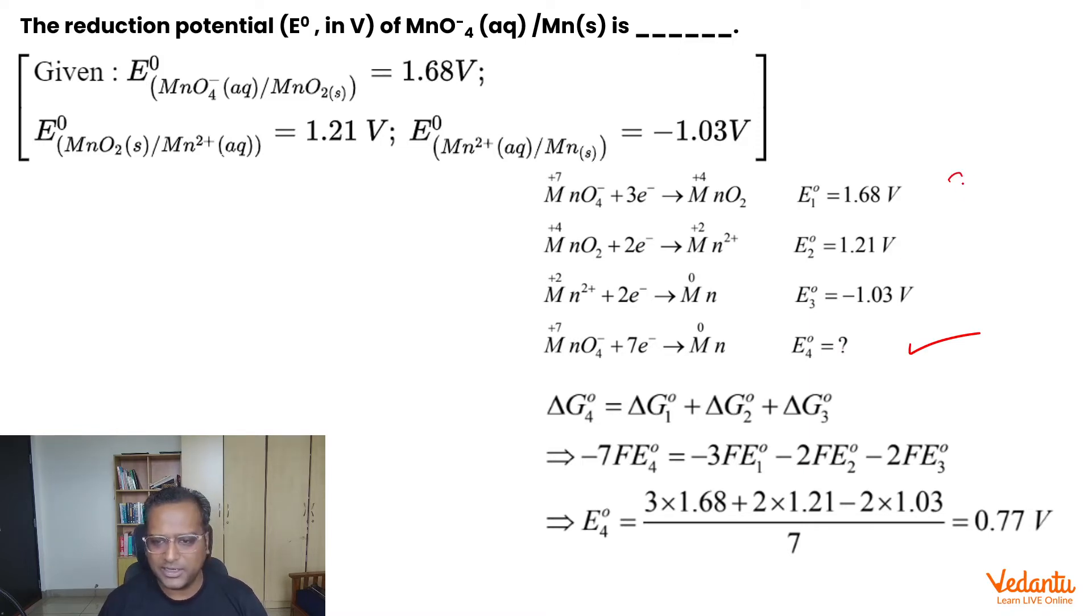We have been given other three reactions. In the first case, permanganate goes to MnO2. Second case, MnO2 goes to Mn2+. The third case, Mn2+ goes to Mn0. All the voltage data has been given to us.